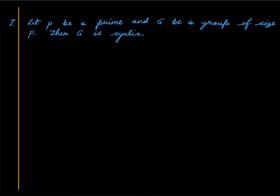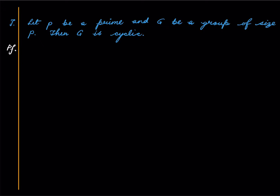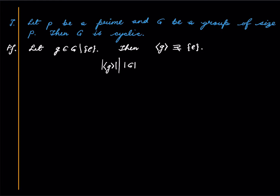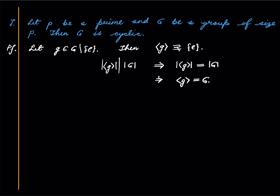Here is another example. If p is a prime and G is a group of size p, then G is cyclic — hence isomorphic to Z mod pZ. Why? Let g in G be different from the identity. The subgroup generated by g is strictly bigger than the trivial subgroup, and by Lagrange's theorem its size divides p. Since this size is greater than one and divides a prime, it must equal p, meaning the subgroup generated by g is all of G. So any non-identity element is a generator.